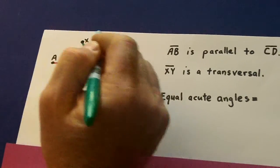Meanwhile, our obtuse angles are all equal here. And that's 2, 3, 6, and 7.